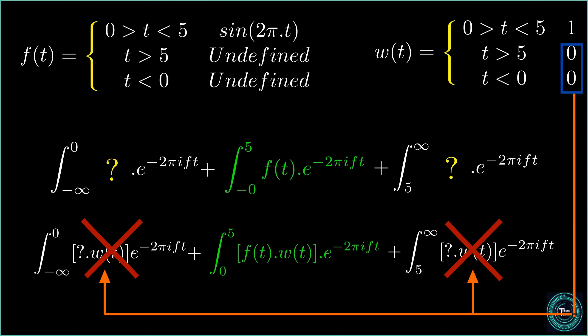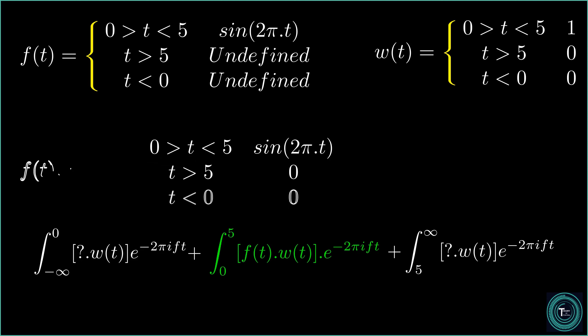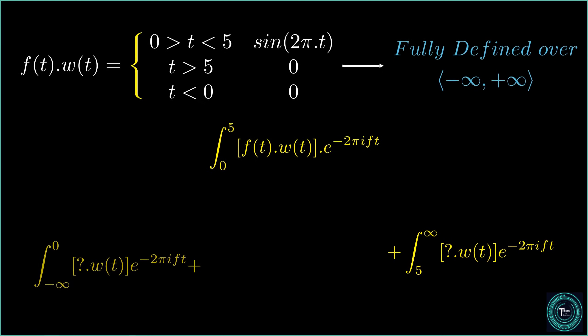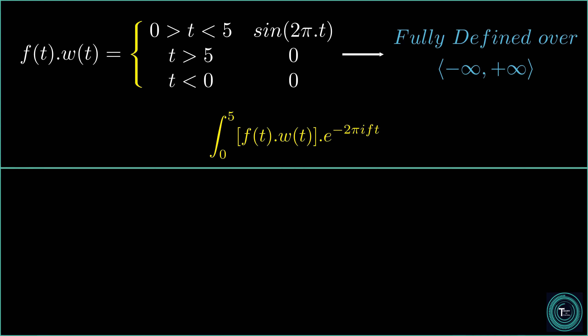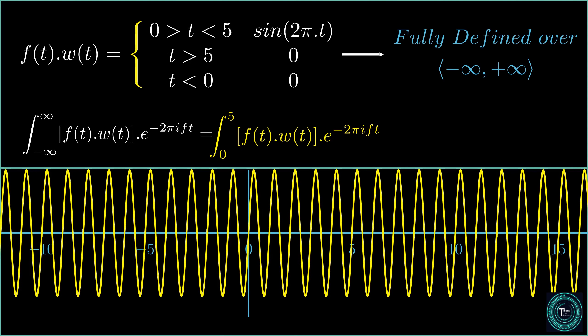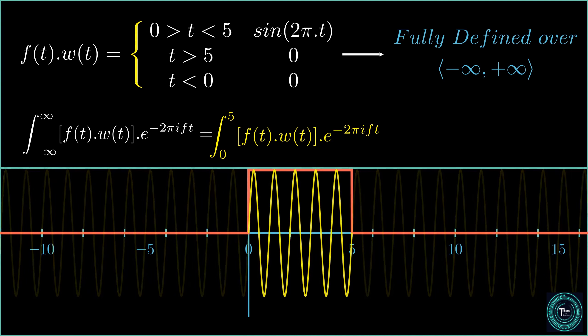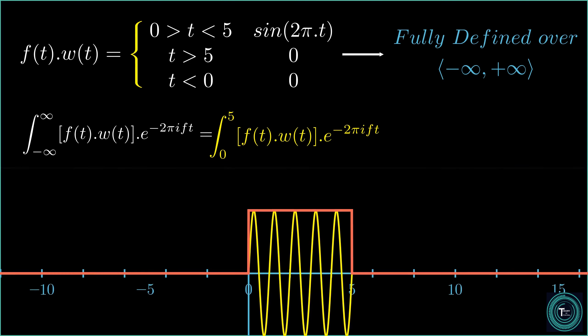So I basically redefine f of t in terms of w of t, which we now call it a window function. And now the whole function is fully defined from minus infinity to infinity. So we have created the infinite limits of the integration by agreeing to pass this window function w of t alongside f of t, thus making sure that everything and every value of our function outside the undefined range is zero.